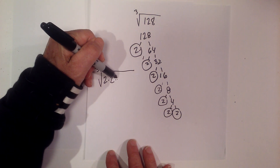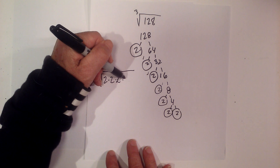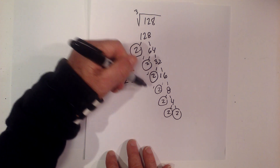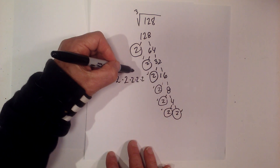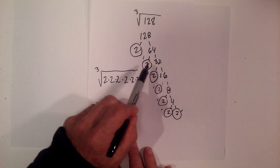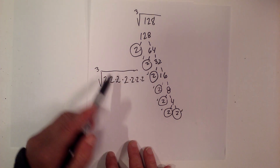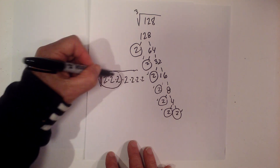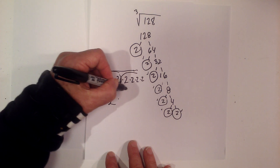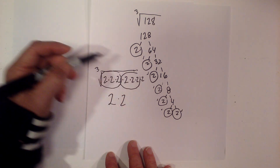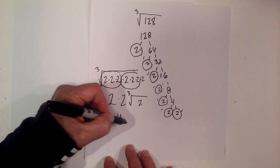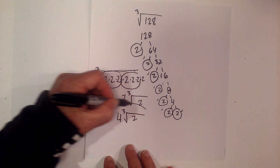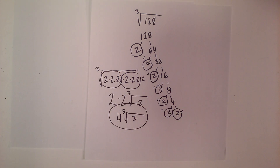Let me double-check that I'm correct — that's 7 twos. I'll pull the triplets out: pull this 2 out, pull this triplet out. And I still have a 2 under the radical sign. Multiply 2 times 2 — that's 4 — and the 2 is still under the radical sign. So it's 4 cube root of 2.